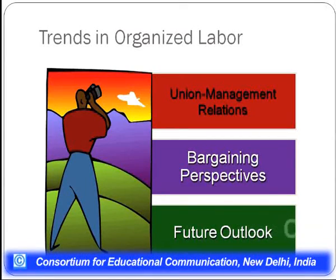Let us talk about certain recent trends in organized labor. The first is union-management relationships, then we have bargaining perspectives, and then a future outlook. You have to be very congenial and develop a good relationship in terms of union-management relationship. Management should not feel that labor is not working for them, and labor should not feel that they are being ignored. The union-management relationship has to be very strong, and human resource managers have to intervene to make these relationships strong.